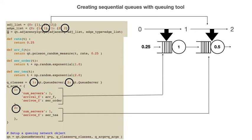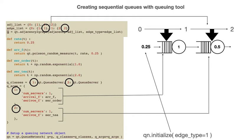We need to explicitly tell queuing tool which edges accept arrivals from the outside world. We do this using the qn_initialize command. This command tells queuing tool that agents are allowed to arrive from the outside world in queues of type 1, but not in queues of type 2.